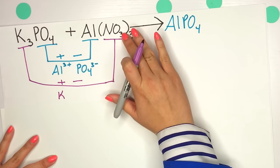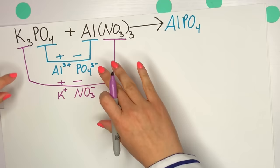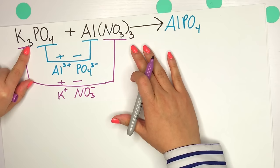So potassium has a plus 1 charge and nitrate or NO3 has a negative 1 charge. Note that I did not bring this subscript, that 3, on down because that 3 was only there to balance out the charges within this compound as a whole.